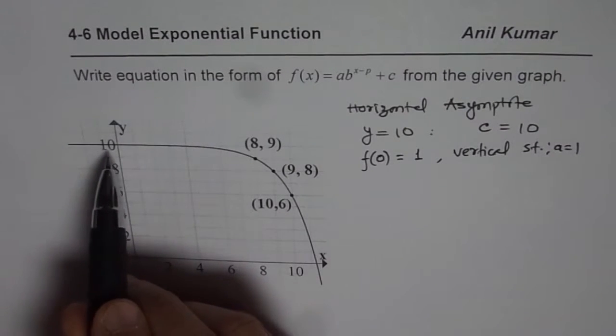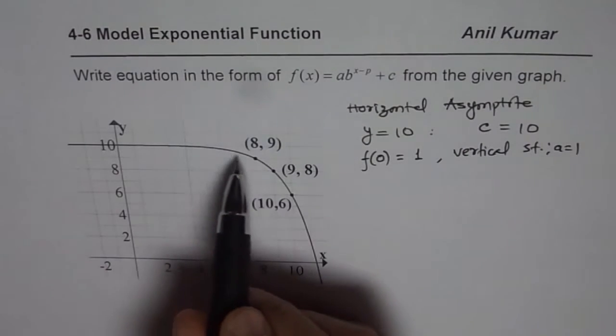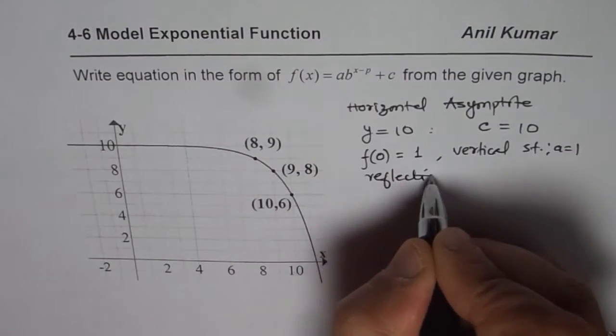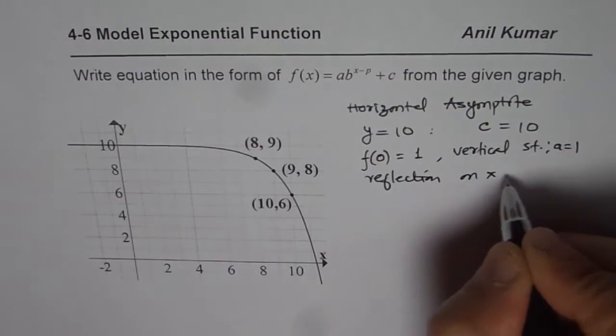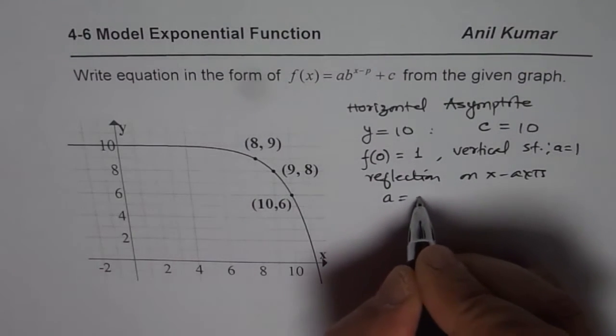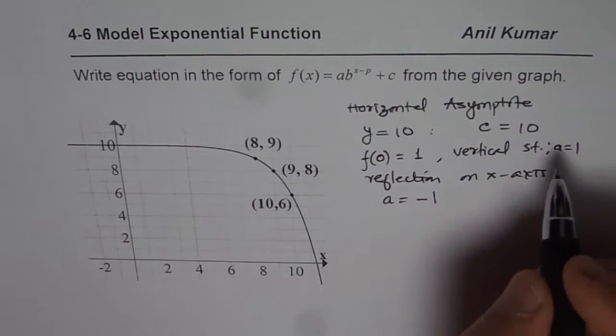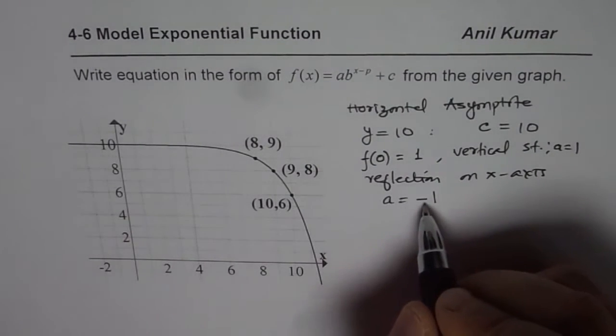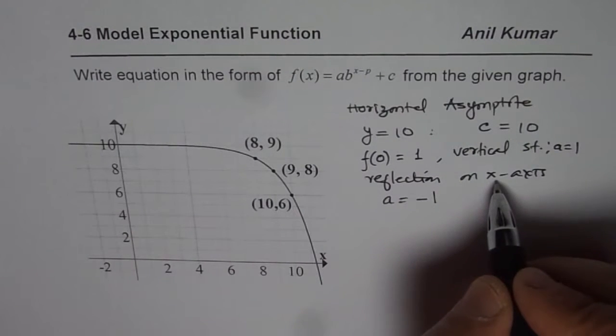Now what we also notice is that the graph has been going downwards. So there is a reflection on x-axis. So that means that we have a as indeed equals to minus 1. So I should say 1 is the vertical stretch factor and minus makes it reflection on the x-axis.